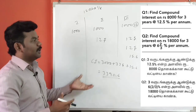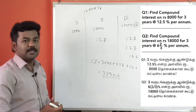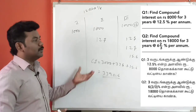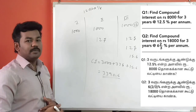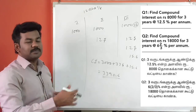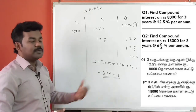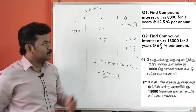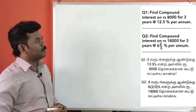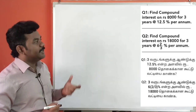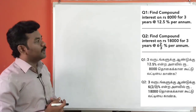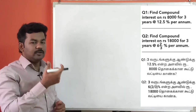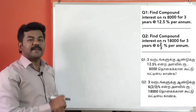If you practice this method, it will be very easy. Now the second question: find the compound interest for Rs. 18,000 for 3 years at 16 and 2 by 3 percent.